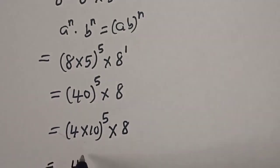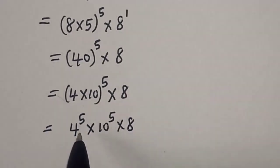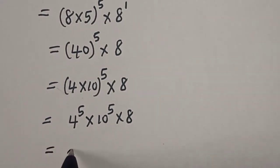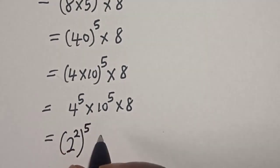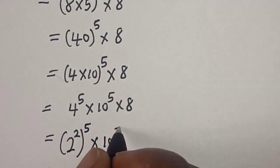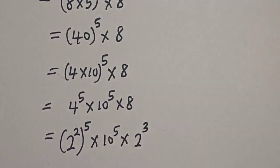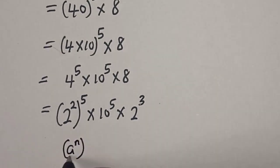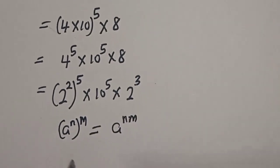This is equal to 4 raised to the power 5, multiplied by 10 raised to the power 5, multiplied by 8. Now 4 can be written as 2 squared. Remember this rule: a raised to the power n, to the power of m, is equal to a raised to the power n times m. So 2 squared to the power 5 gives 2 raised to the power 2 times 5, that is 10.